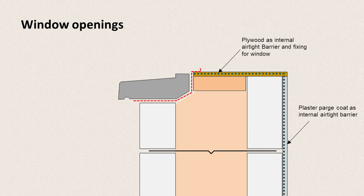Internally, to stop moist air passing through the construction and potentially causing damage to the insulation, we need to have some airtightness layers. For the face of the wall we can use a plaster parge coat — a smooth plaster applied over the inside face of the wall that fills all the small cavities or holes and forms an airtight barrier.